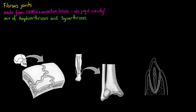Now, fibrous joints can be divided into three groups: sutures, which we'll find in the skull; a syndesmosis; or a gomphosis. We're going to briefly describe how these three types of fibrous joints differ.